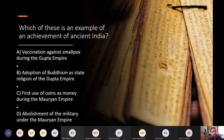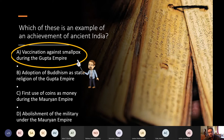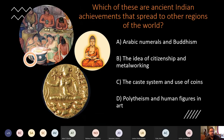Which is an example of an achievement of ancient India? Options: vaccination against smallpox during the Gupta Empire; adoption of Buddhism as a state religion in the Gupta Empire; the first use of coins as money during the Mauryan Empire; or abolishment of the military under Mauryan rule. The correct answer is A — vaccination against smallpox. Which ancient Indian achievement spread to other regions? Options: Arabic numerals and Buddhism; citizenship and metalworking; the caste system and use of coins; or polytheism and human figures in art. The correct answer is A — Arabic numerals and Buddhism.